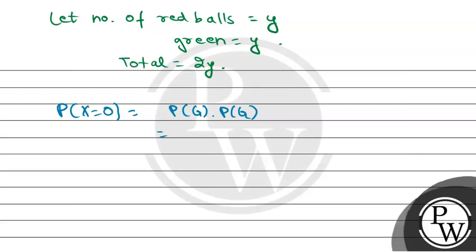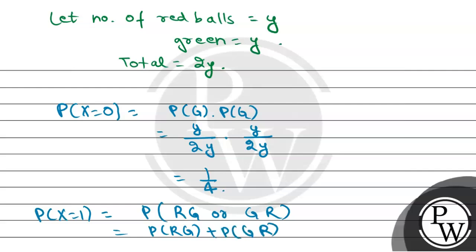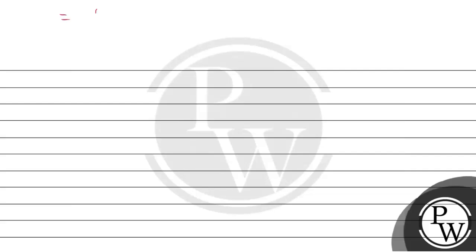Let number of red balls equal y, green equals y, total equals 2y. For P(X=0), probability of no red balls equals y/(2y) times y/(2y), which gives 1/4. Similarly, calculating for one red ball gives 1/4 plus 1/4.